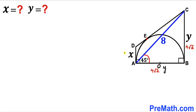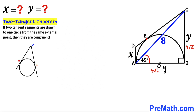Now our task is to find X. We recall the two-tangent theorem: if two tangent segments are drawn to a circle from the same external point, they are congruent. Let's apply this to our problem.